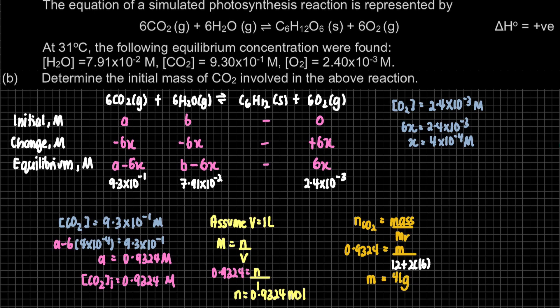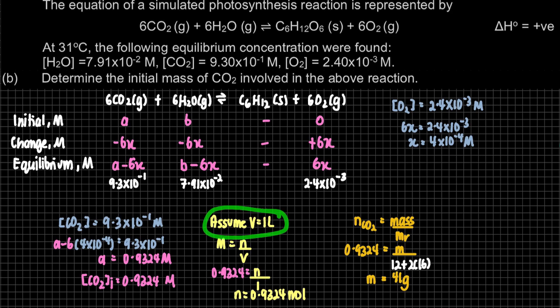Please refer to the list of constants for atomic masses: C is 12, O is 16, and CO₂ has two oxygen atoms giving a molar mass of 44 g/mol. That is the full step for question B. When asked for mass, first find the initial concentration using the ICE table, then assume a volume of 1 litre and convert to mass.